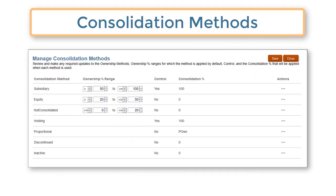Financial Consolidation and Close Cloud includes seven predefined consolidation methods. Consolidation methods are automatically assigned to child entities based on their percent ownership by their parent.